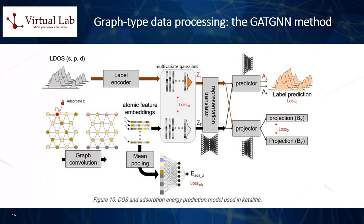When the slab-type structure of the catalyst material surface under investigation is loaded in the module, it is treated as graph-type data. A processing method called GATGAN (graph attention graph neural network) is used. Within this method, each atom is treated as a node, and up to 12 neighboring atoms located within a certain distance are treated as edges. The feature of each node consists of a one-hot vector of eight atomic pieces of information from the CGCNN approach: the atomic family, atomic period, electronegativity, covalent bond radius, the number of electrons in the outermost shell, the ionization energy, the electron affinity, and the atomic volume.